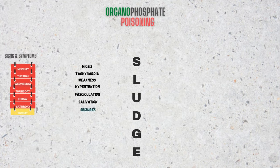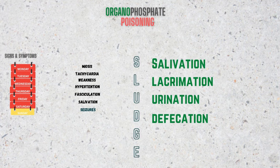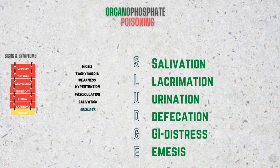Or just remember the word SLUDGE. SLUDGE is used to describe the muscarinic manifestations: S for salivation, L for lacrimation, U for urination, D for defecation, G for GI distress, and E for emesis.